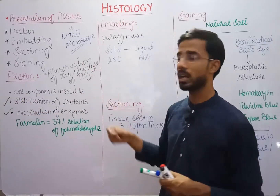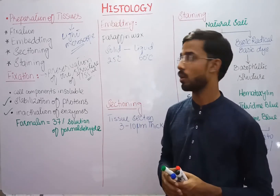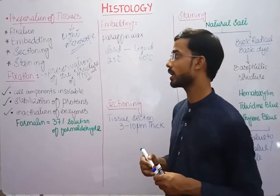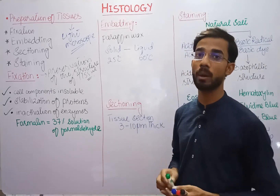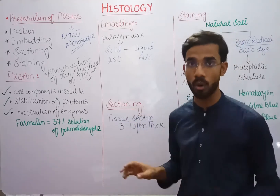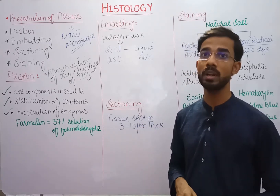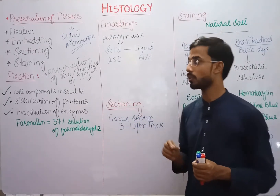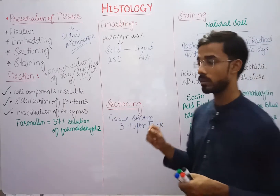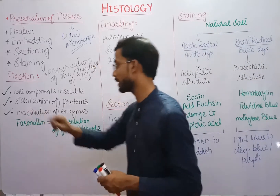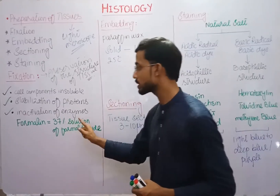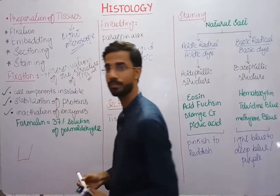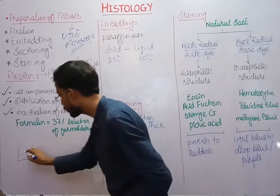The second reason for fixation is to stabilize the proteins, because there are a lot of proteins which can be destroyed or change their shape, so we have to stabilize them. Third, we make cellular components insoluble, because many components of the cell can dissolve, so we have to prevent them from dissolution. The chemical used for fixation for microscopy is formalin.